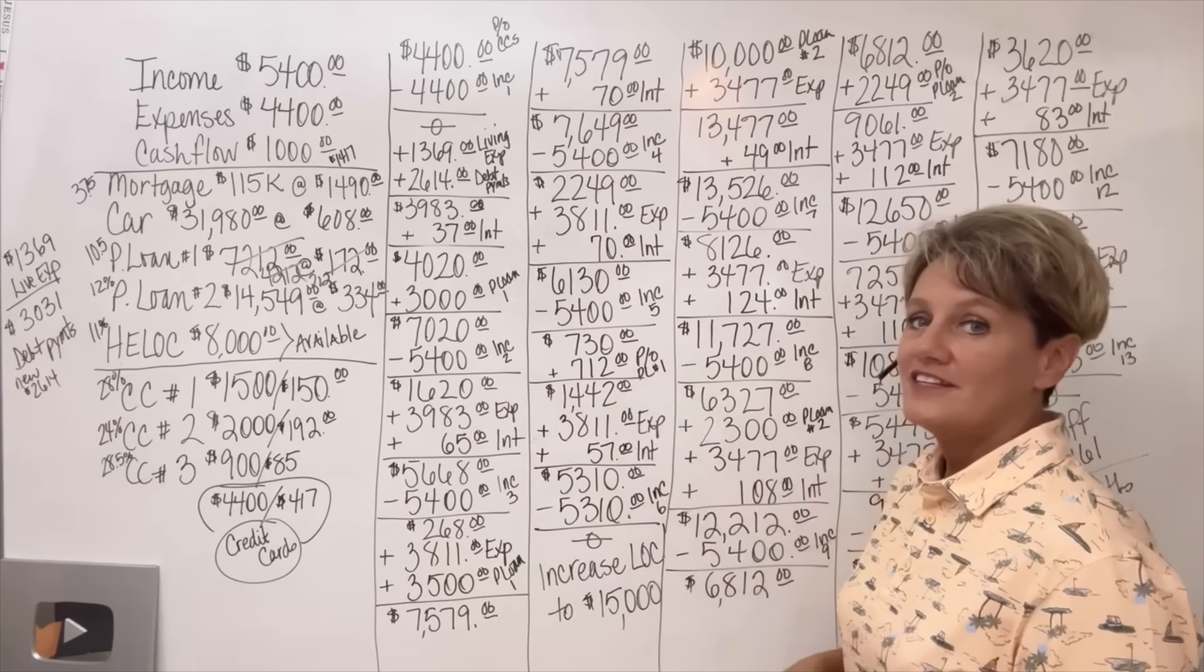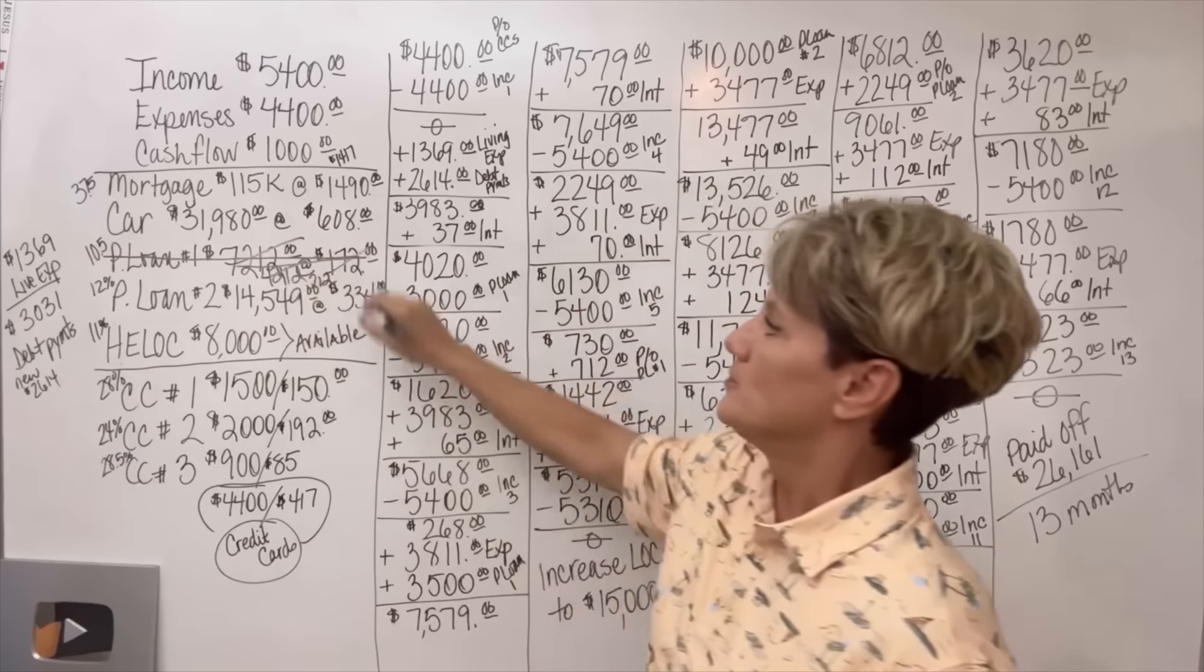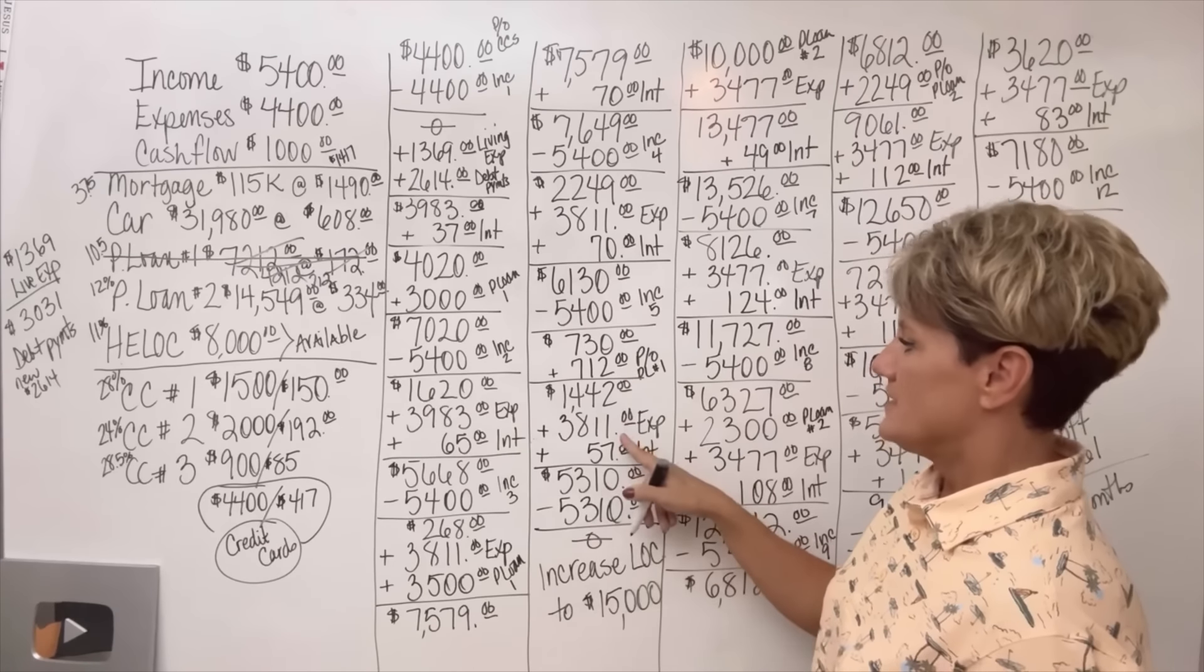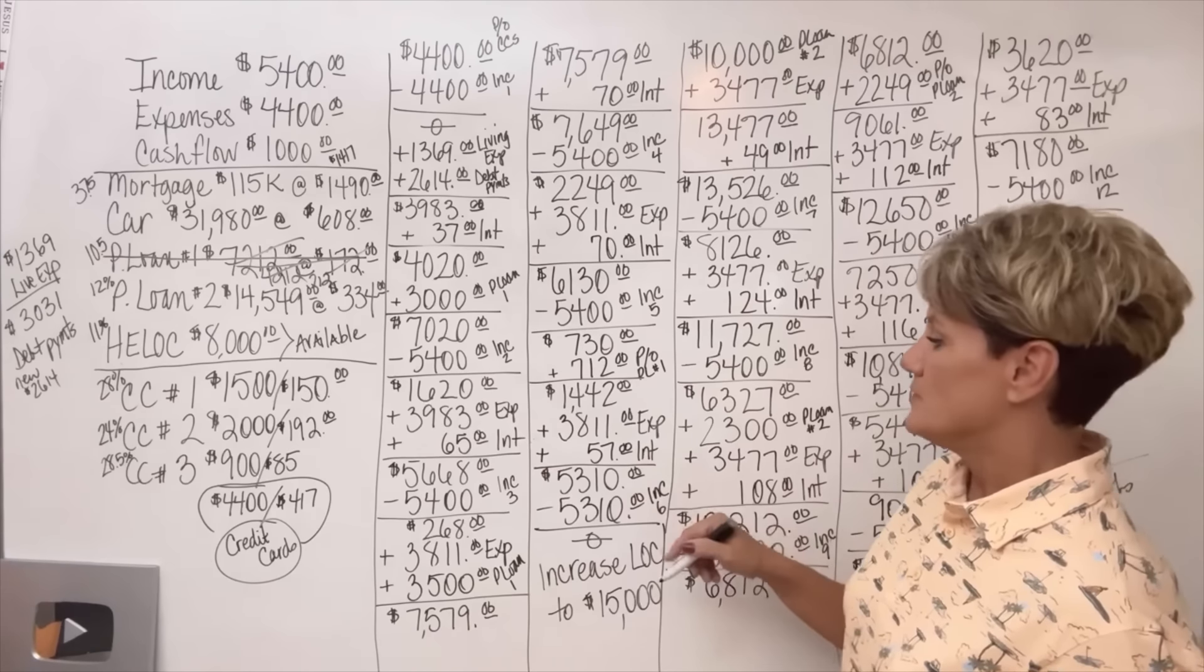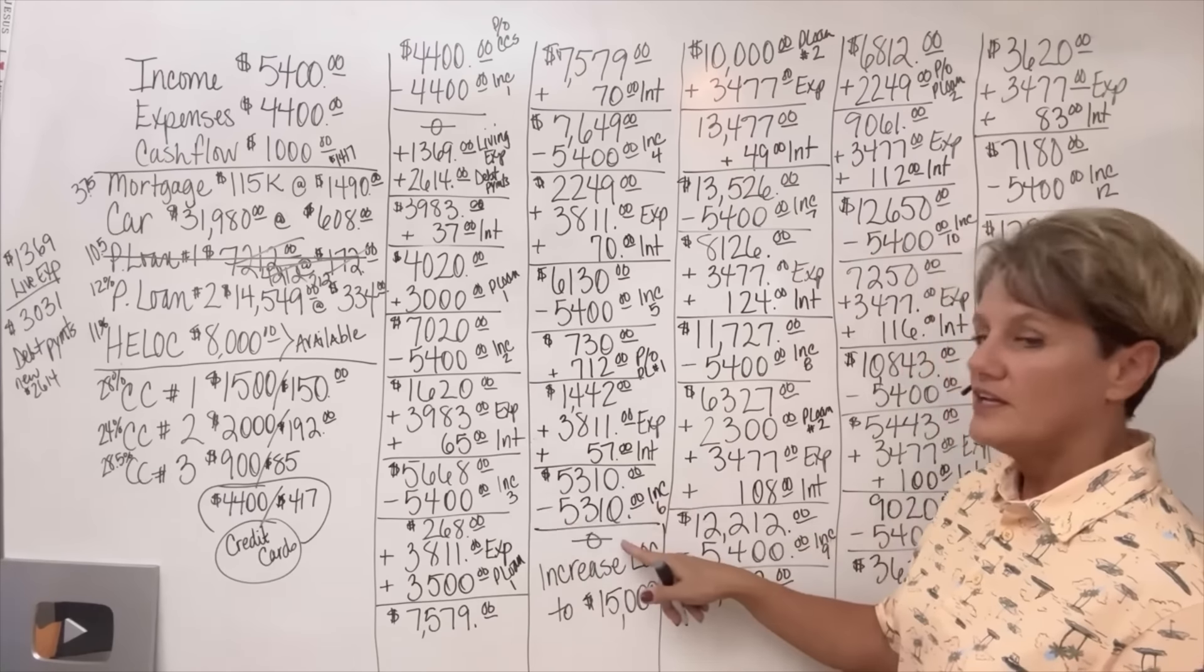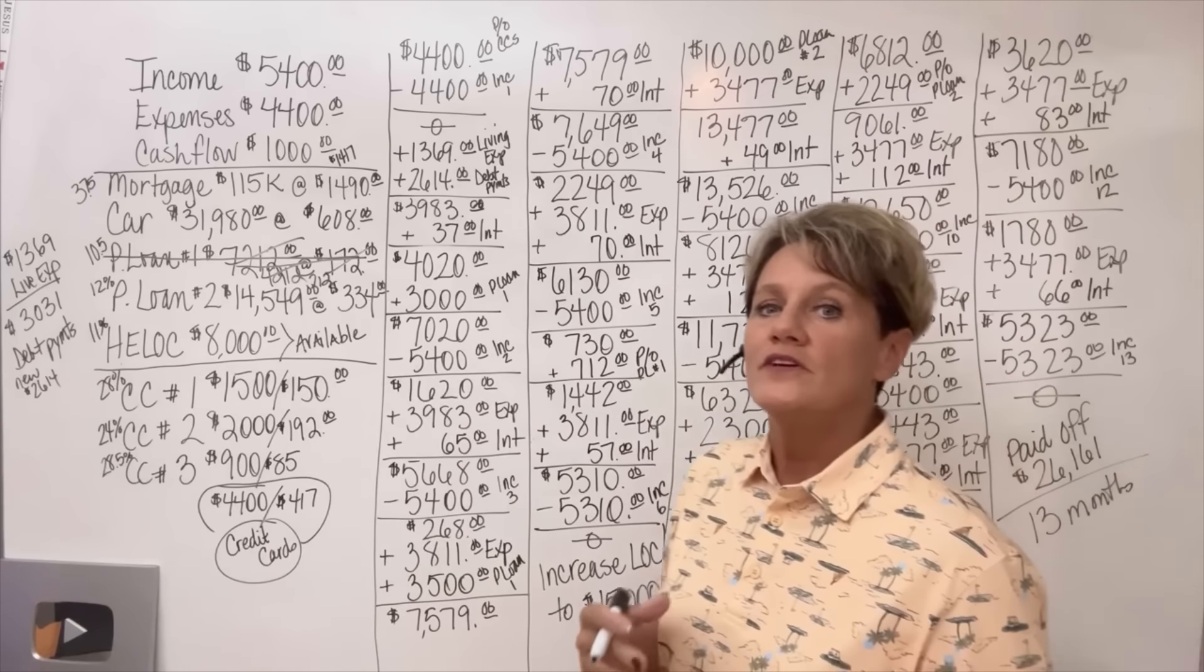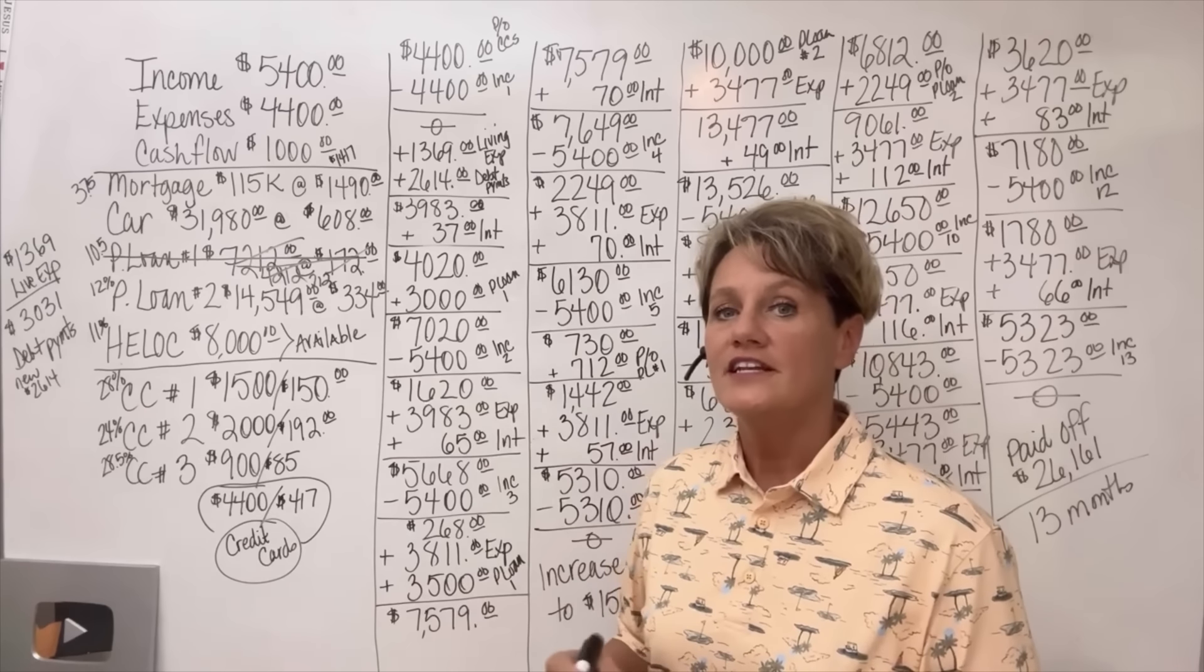We're now going to pay off the $712 balance left on personal loan number one, meaning that personal loan number one is completely paid off. Now he can move on to personal loan number two. The $712 added in brings him up to $1,442. His expenses at $3,811 is going to come out again throughout the month, and then $57 in interest has been charged on this month, bringing him to a balance of $5,310. In month six, his income is going to go in, bringing him to a zero balance. So in six months, he paid off $4,400 in credit cards and $7,212 in a personal loan. Now when you have been using a line of credit for a while, like he has now at six months, he was able to go back and get an increase in his line of credit.